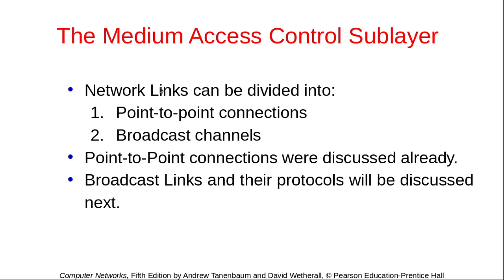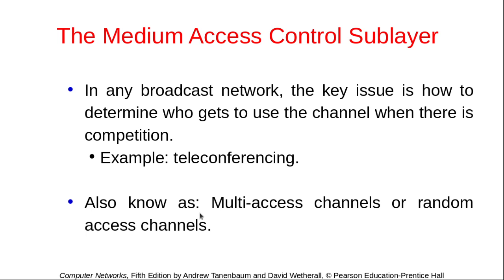Network links can be of two types: one is point-to-point, which has already been seen, and the next is broadcast channels, which is going to be discussed now. For any broadcast network, if there are multiple senders, if any one user is sending, the others will have to wait. That means only one sender can be sending at a time, and that's why it is very important to determine who gets to send at a particular time.